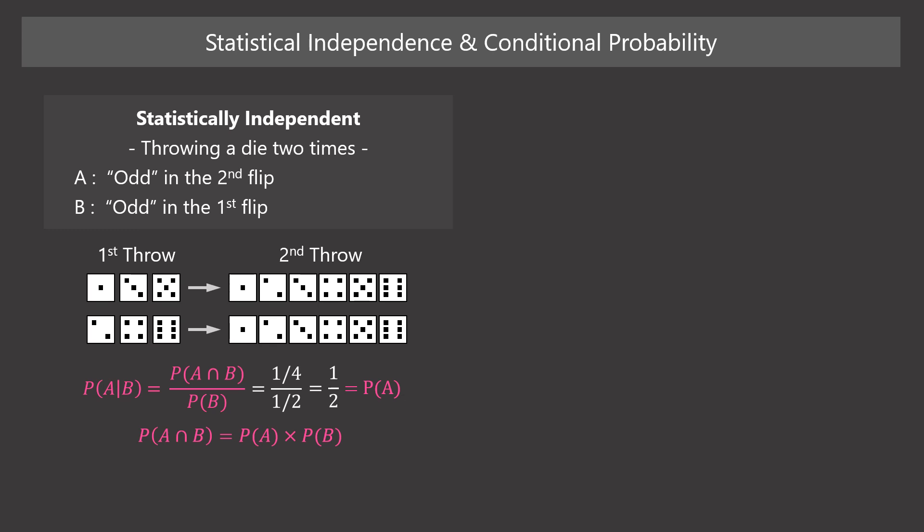This is evident considering this equation, which holds only when events A and B are statistically independent. In this case, two events are statistically independent. That is, the outcome of the first throw does not affect the outcome of the second throw. If the two events are statistically independent, the conditional probability of A given B equals the probability of event A.